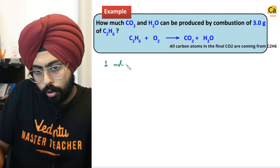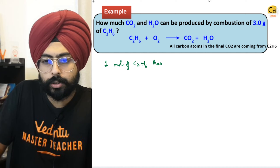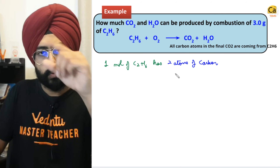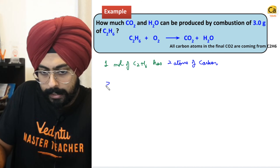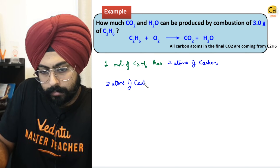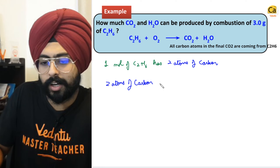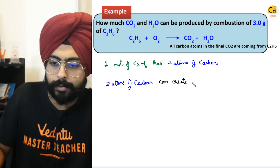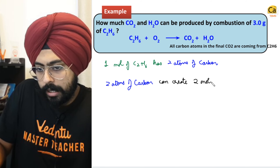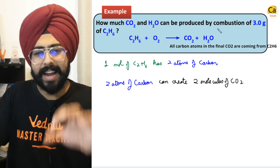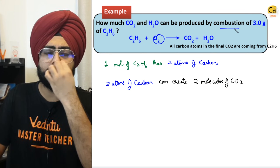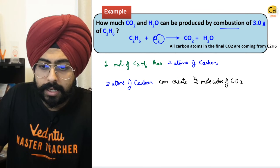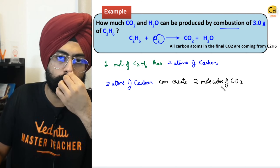One mole of C2H6 has two atoms of carbon. These two atoms of carbon can create a maximum of two molecules of CO2. If I have enough oxygen — assume you have enough oxygen, you are combusting it in air — these two atoms of carbon combined with enough oxygen can create two molecules of CO2, because one molecule of CO2 has one atom of carbon in it.